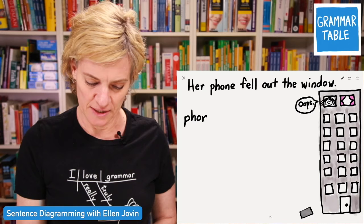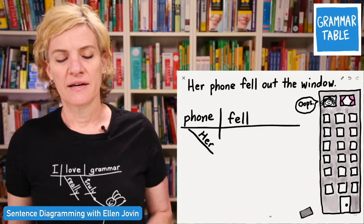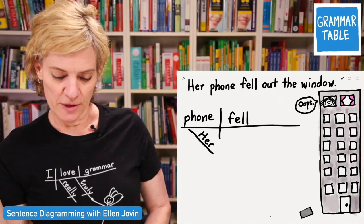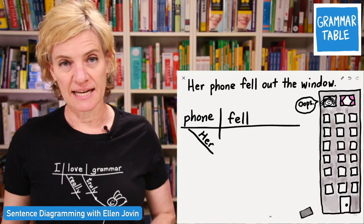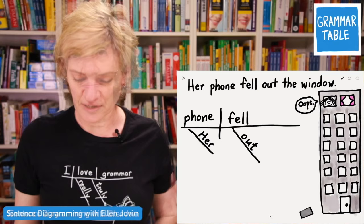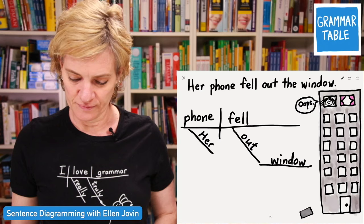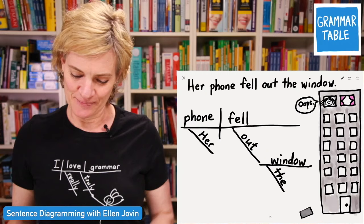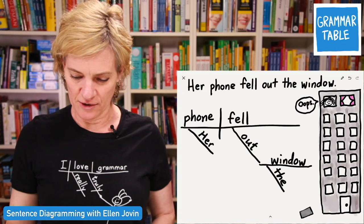Now phone is the subject and fell is the verb. Her — a possessive adjective — refers to the phone, so it goes under there. We have to decide what to do with 'out the window.' Out is functioning as a preposition, and 'out the window' is a prepositional phrase. A prepositional phrase consists of the preposition — in this case, out — and then the object of the preposition, which is 'window,' placed on a horizontal line below. I was very excited in eighth grade when I learned this because it makes the diagram look very fancy. Her phone fell out the window — yes, that is it.